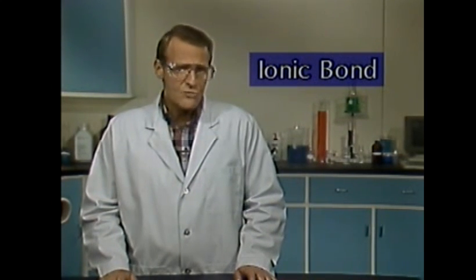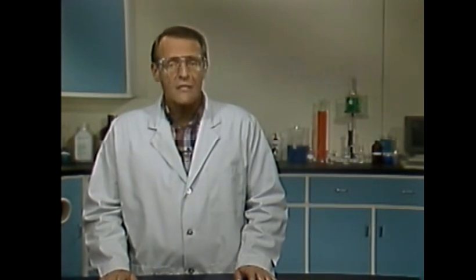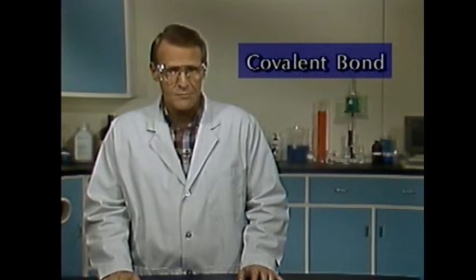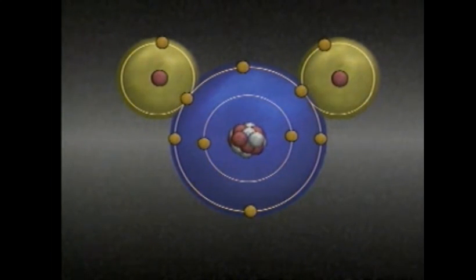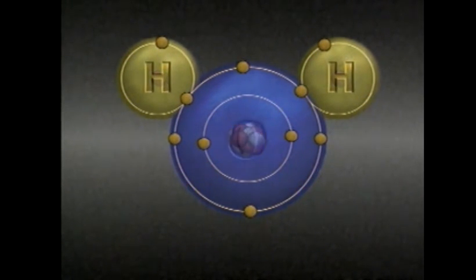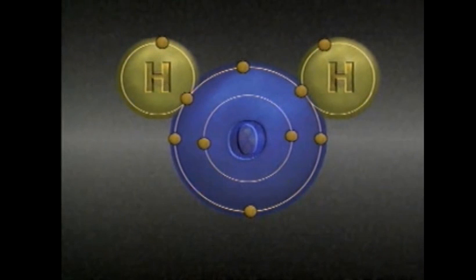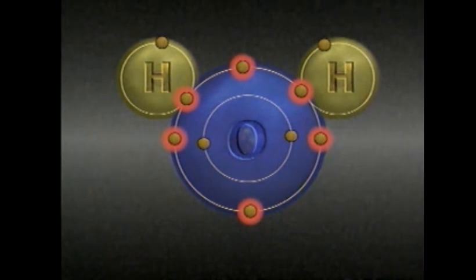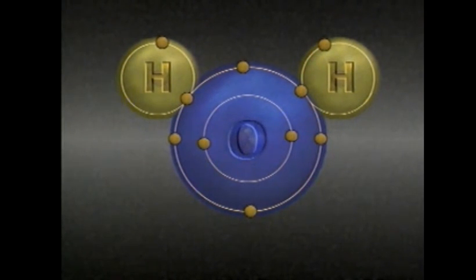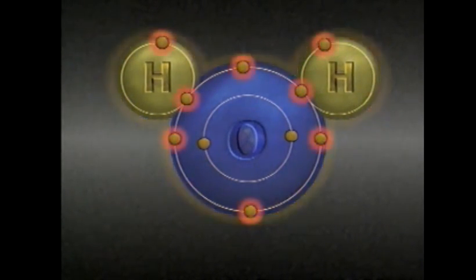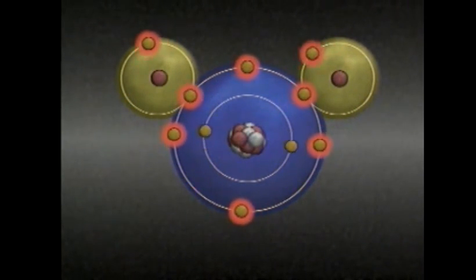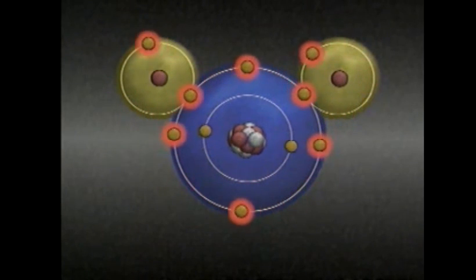However, ionic bonds are not the only means of forming molecules. Molecules can also be formed when atoms share electrons. This type of bond is called a covalent bond. For example, water molecules are held together by covalent bonds. A water molecule consists of two hydrogen atoms and one oxygen atom. Each hydrogen atom has one valence electron, so that makes a total of two. The oxygen atom has six valence electrons. When hydrogen and oxygen combine to form water, the three atoms join together by sharing the eight valence electrons. The eight electrons orbit around all three nuclei, and it's the sharing of these valence electrons that holds the water molecule together.